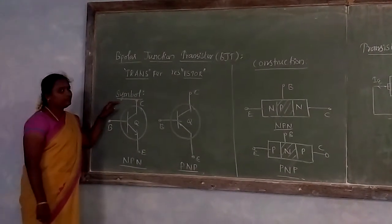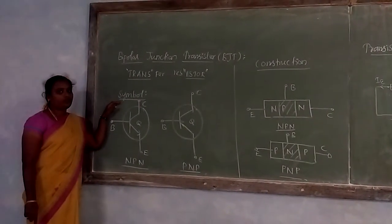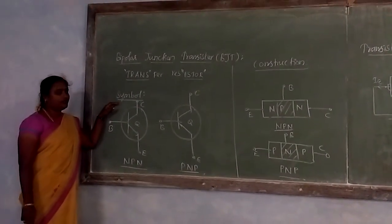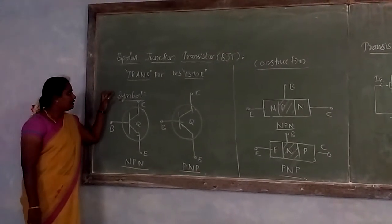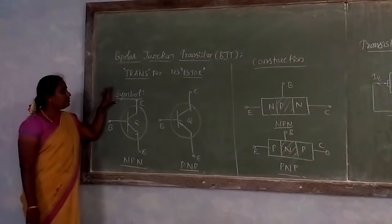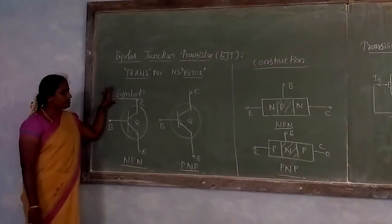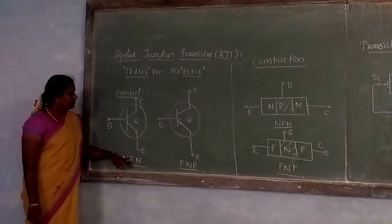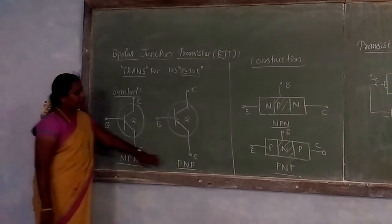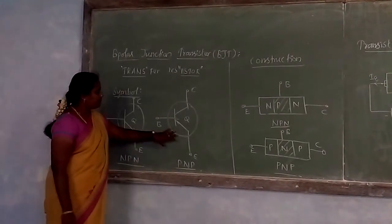There are two types of transistors: NPN and PNP. The symbols of transistors are shown here — the NPN transistor symbol is here and the PNP transistor symbol is here.